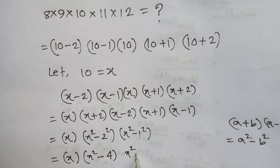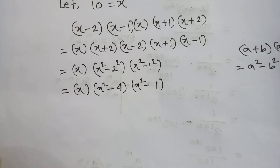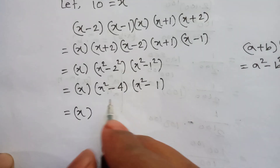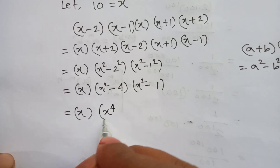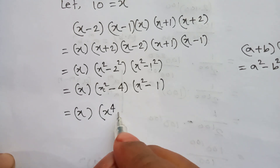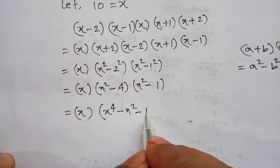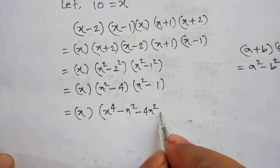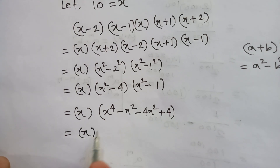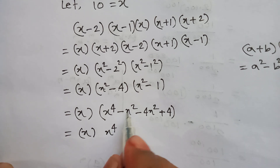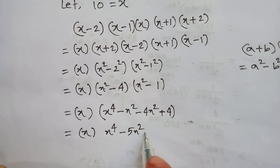Expanding further: x squared minus 4 times x squared minus 1 gives x to the 4th minus 5x squared plus 4. So the full expression becomes x times (x to the 4th minus 5x squared plus 4).